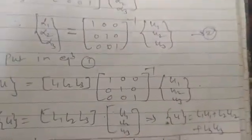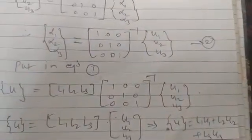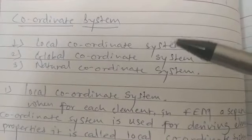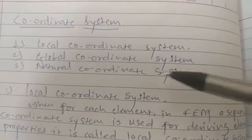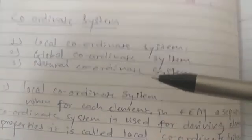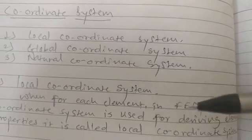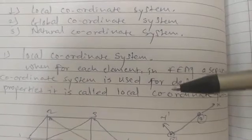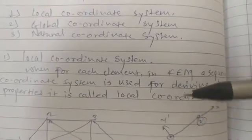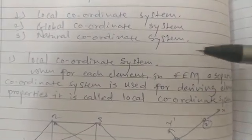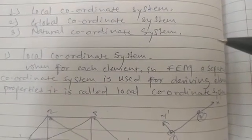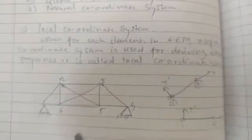Now we will see the types of coordinate systems used in finite element analysis. There are three types: local coordinate system, global coordinate system, and natural coordinate system. For the local coordinate system — when a separate coordinate system is used for each element in the finite element method to derive its element properties, it is called the local coordinate system.